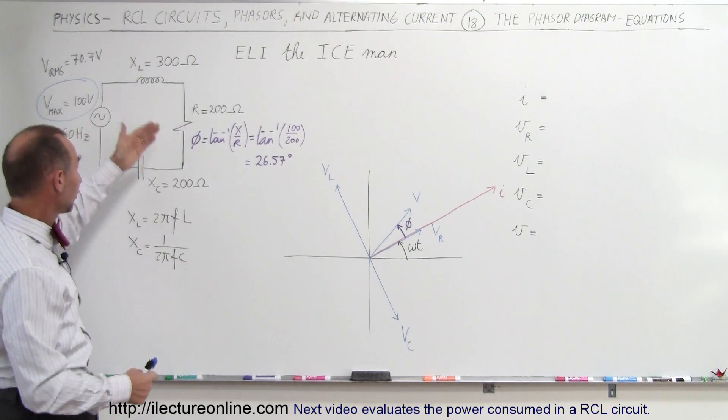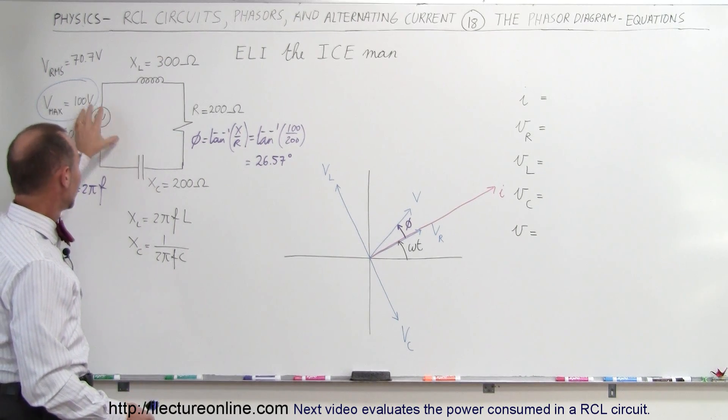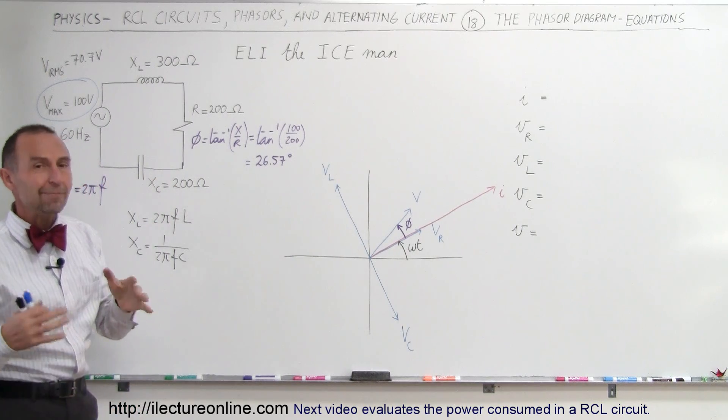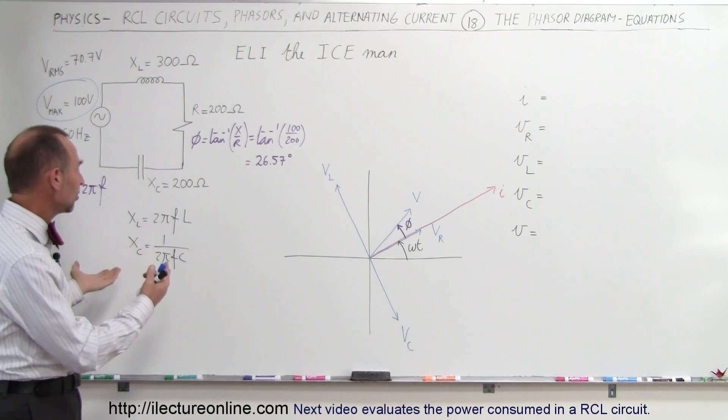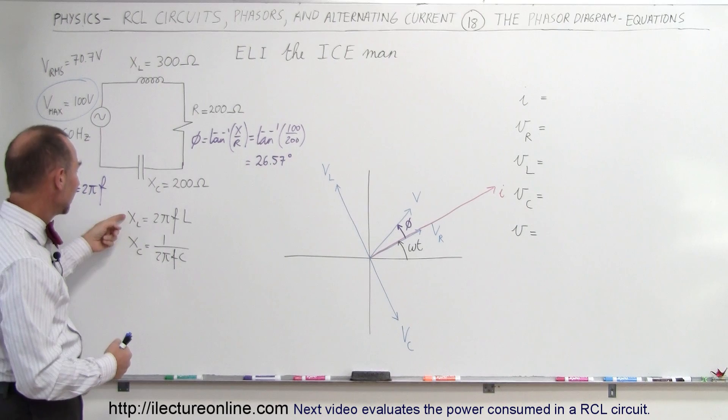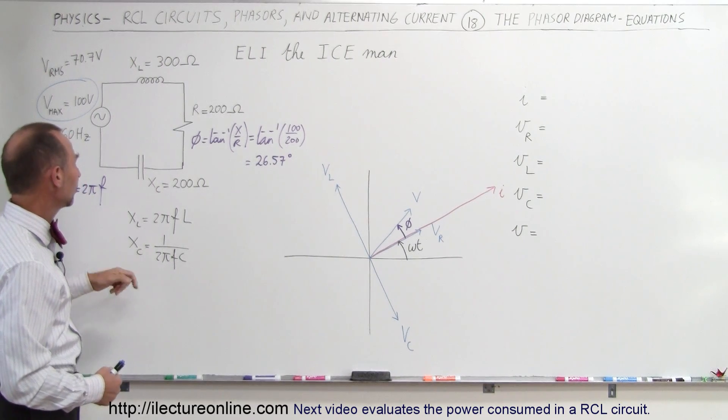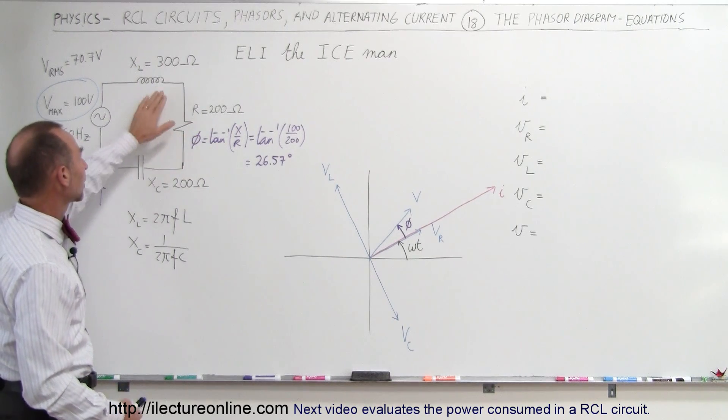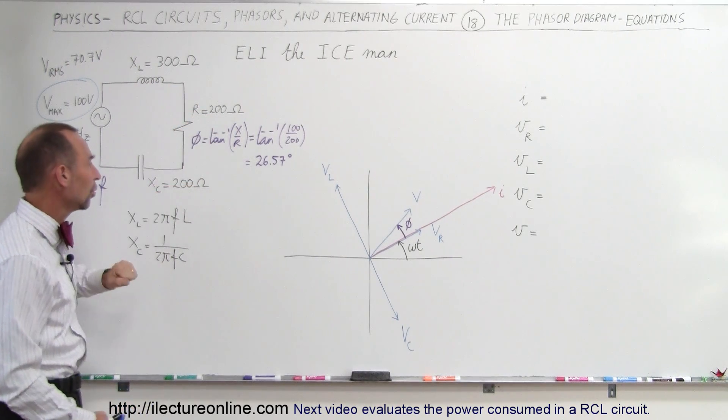Here again we have an RCL circuit: an inductor, a resistor, a capacitor, and an oscillating voltage supply. The numbers don't really mean that much right now, it's just an example. We know how to find the inductive reactance, the capacitor reactance based upon the frequency and the inductance and the capacitance. Let's say that the values come out to be what they are here: 300 ohms, 200 ohms, and 200 ohms.